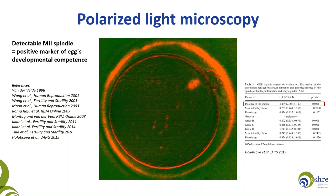Next question: can a fragmented polar body be an indication of poor meiotic spindle? From my experience with live microscopy in human oocytes, fragmentation happens later in development — after polar body extrusion, the polar body is initially nicely rounded and then later can get fragmented. So it could go hand in hand with spindle deterioration. I am inclined to believe it, but I personally do not have this data.